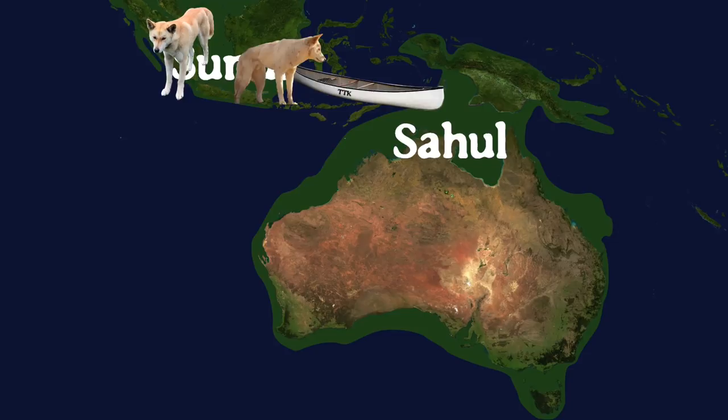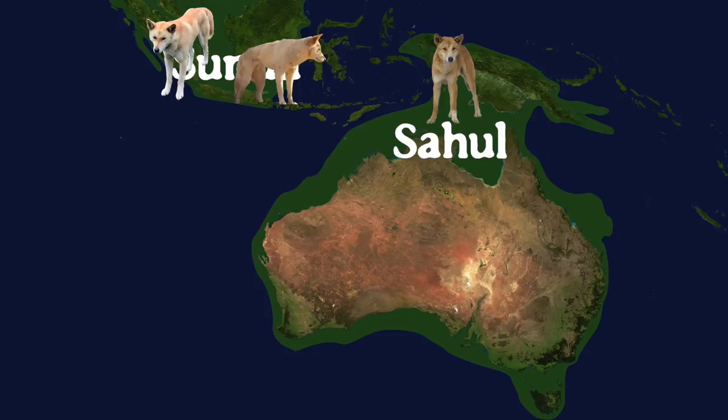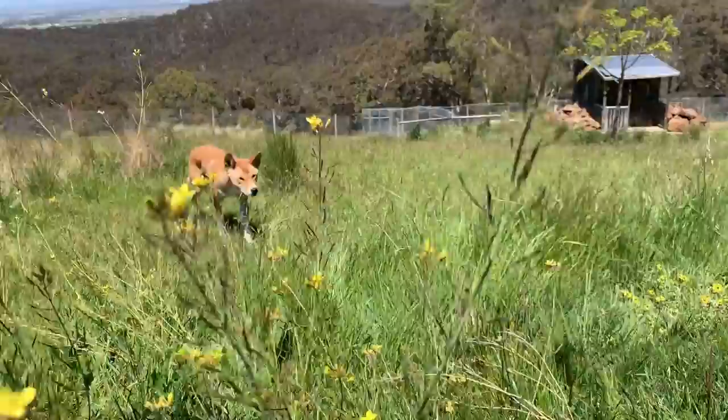Once the dingoes' ancestors got to Sahul, they probably arrived in the north first, which is the bit called New Guinea today. From there, they spread through large amounts of the continent. It's hard to say exactly when dingoes entered the Australian part of Sahul — it's kind of like putting the ice out on the bench, but this time we have a few more clues.